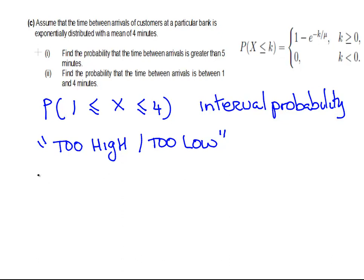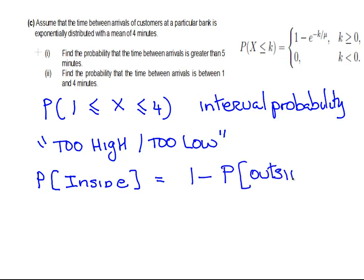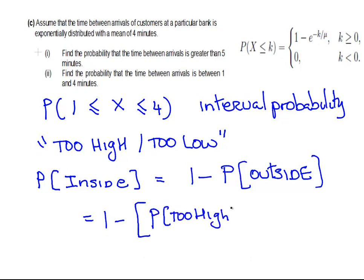The probability of being inside an interval is 1 minus the probability of being outside the interval. And if you're outside the interval, you're either too high or too low. So that's equal to 1 minus the sum of the probability of being too high plus the probability of being too low.